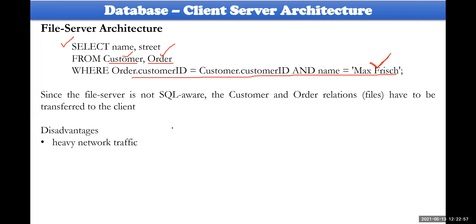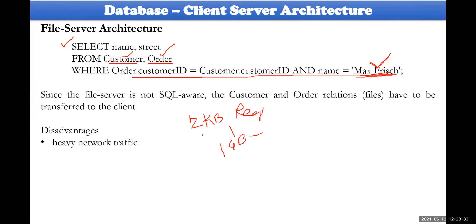Because the user requires only 2 KB of data but the file server sends 1 GB, there is heavy network traffic. The second problem is high total cost of ownership — transferring 1 GB requires much more internet bandwidth and network equipment than transferring 2 KB, resulting in wasted resources.